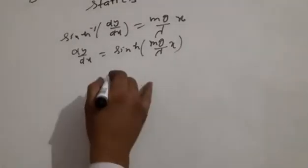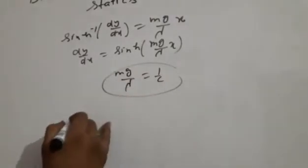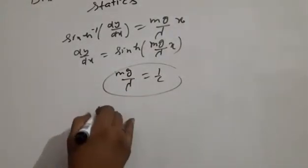Taking mg upon lambda equal to constant quantity, mg upon lambda equal to 1 upon c. Then sine hyperbolic x upon c equal to dy upon dx.